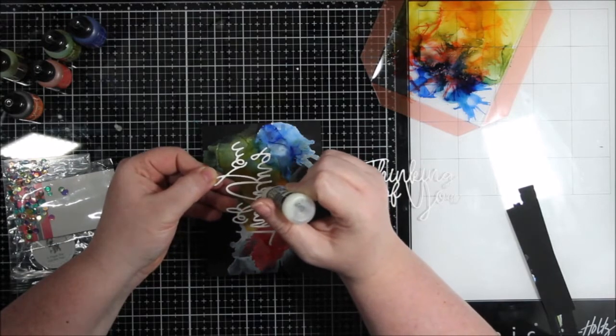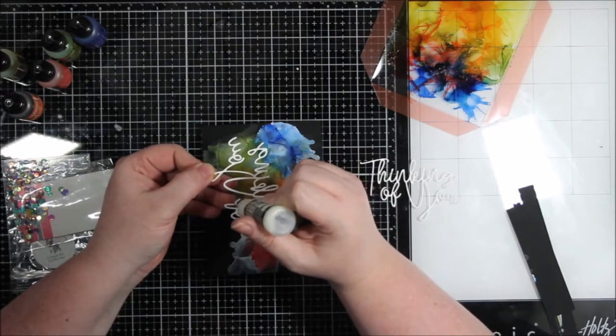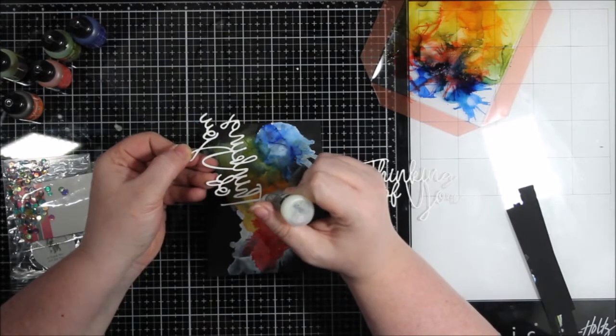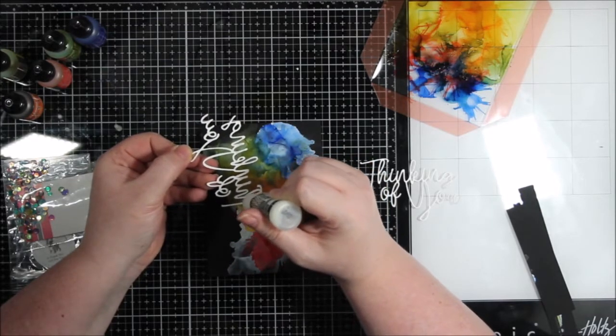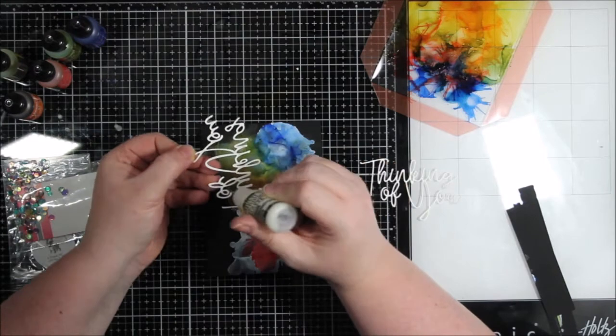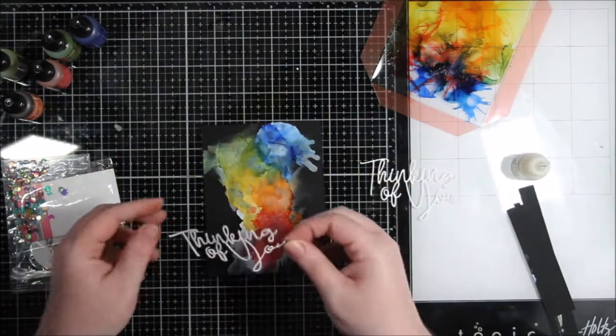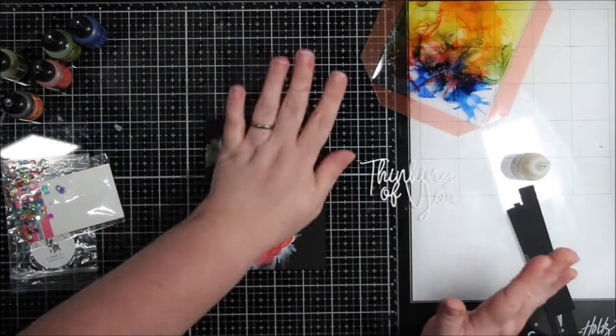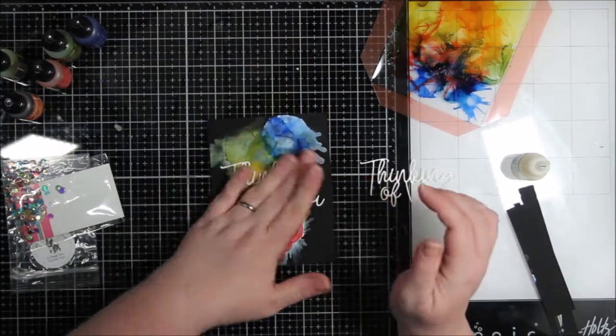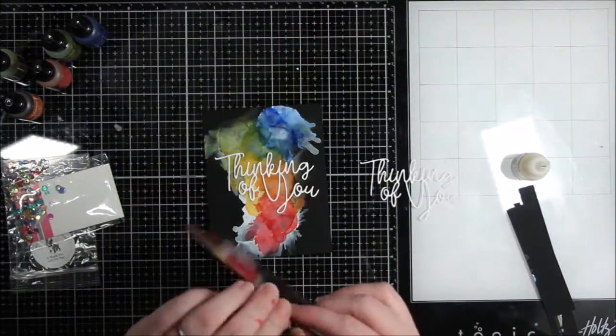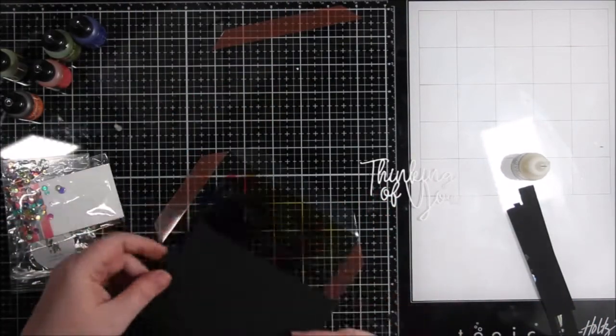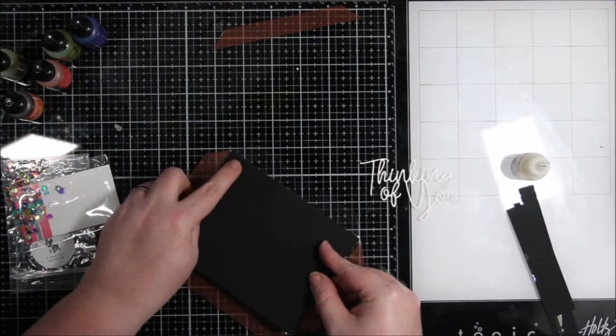So I'm going to adhere that. I used Ranger's multi-matte medium, multi-medium matte. I have it in a little bottle, but then I have a little fine tip nozzle on it worked really well. Just some tiny little dots of adhesive. And I put this on here. Now this is cool. I mean, I would love to get a card like that, but this shaker panel is going to create so much depth here.